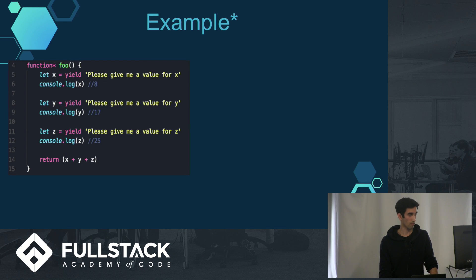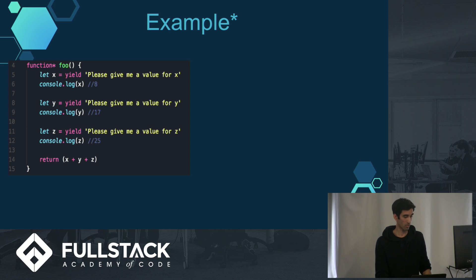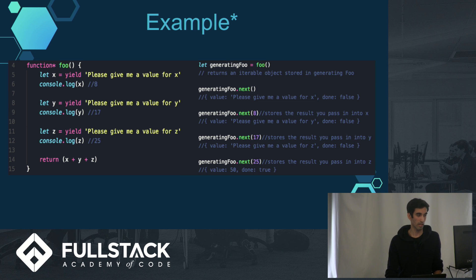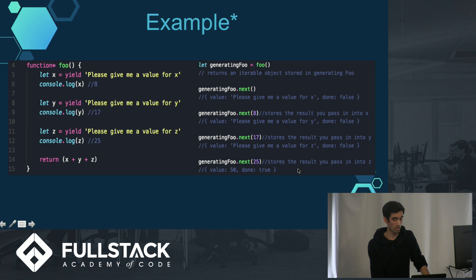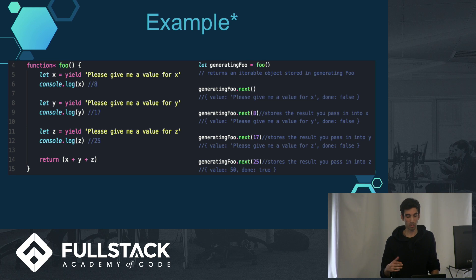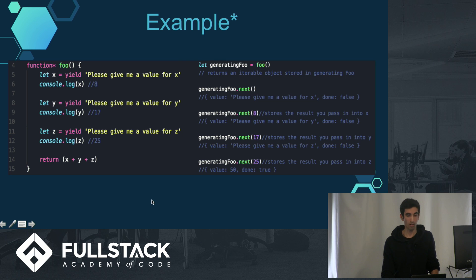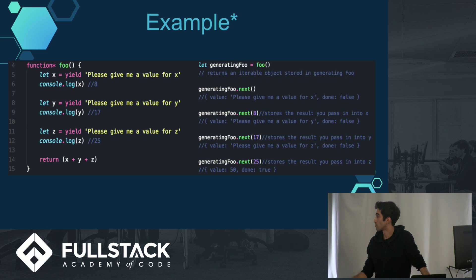Here's a small example. The function foo takes in an expression for x, y, and z, and it'll pause at each yield. We store foo inside of generatingFoo, and then we call next on it, and the value we get asks for a value for x. The next time we run it, we can pass in that value. It's a little tricky because the first yield gives out a value, and then when we call next on it again, we're actually passing in a value to that yield. On the last call, generatingDone x25, we store a value into z, get the final result which is 50, and done is true, indicating the function is complete.